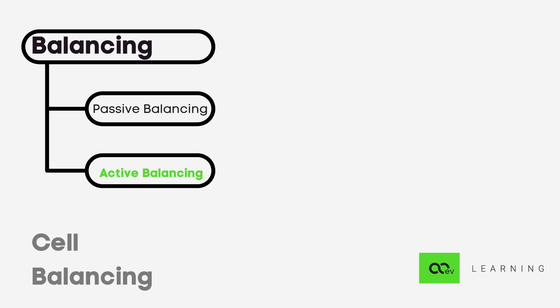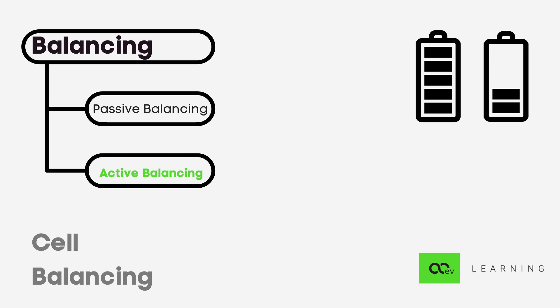Active balancing moves charge from cells having more charge to cells having less charge, basically moving charge from high potential to low potential and balancing out the circuit.